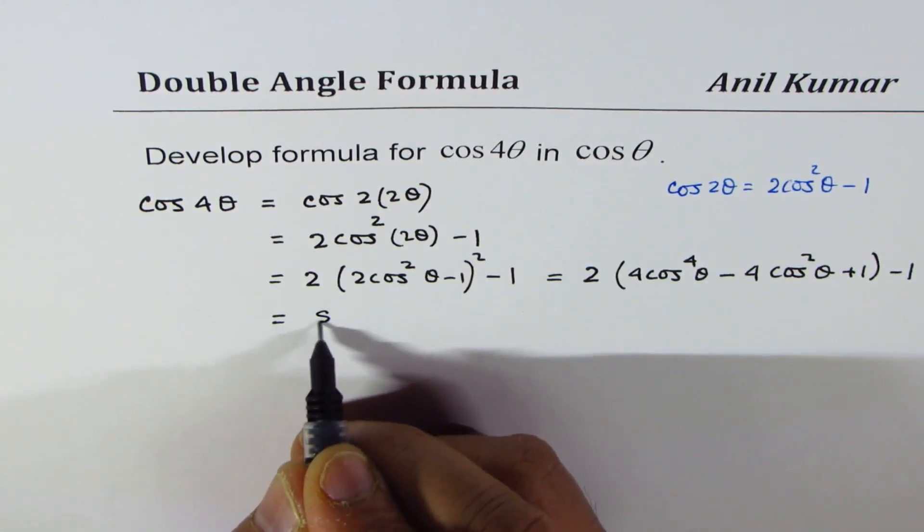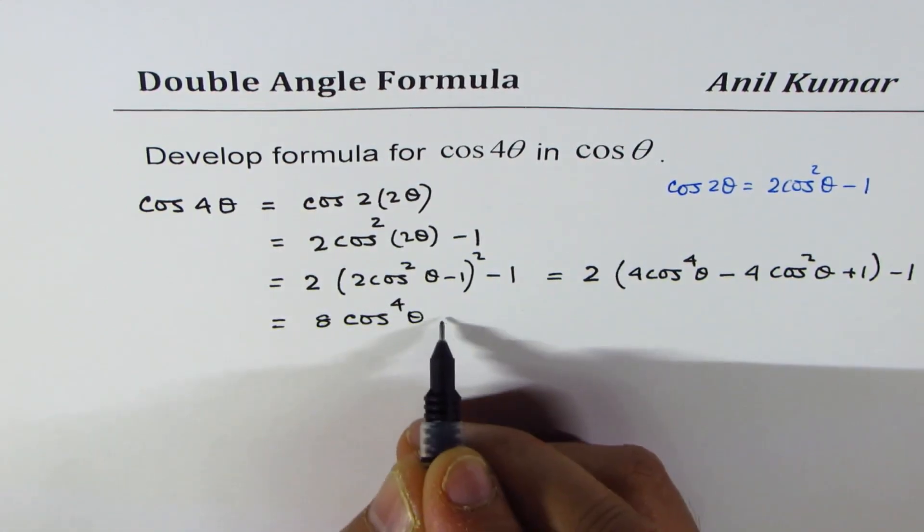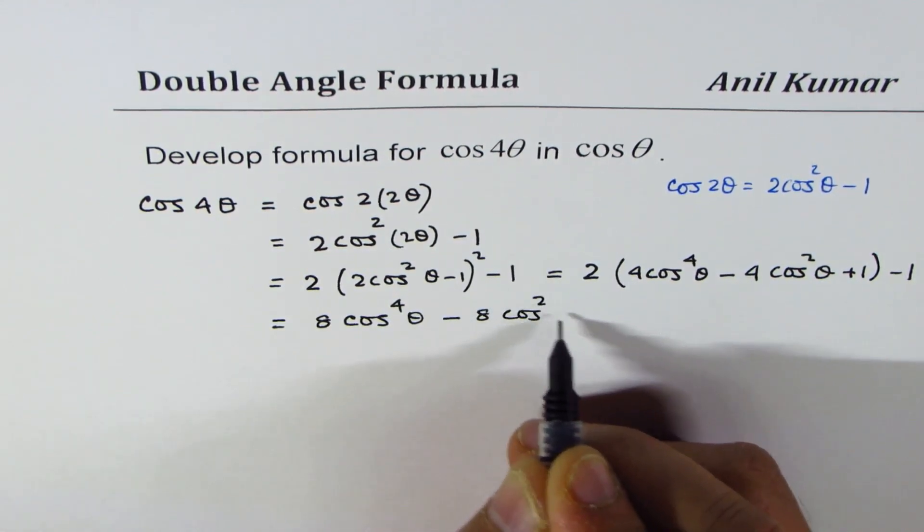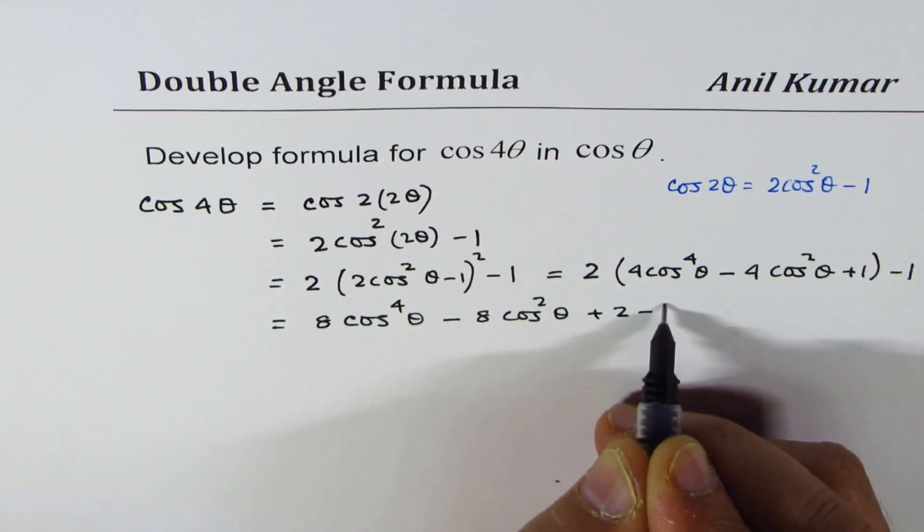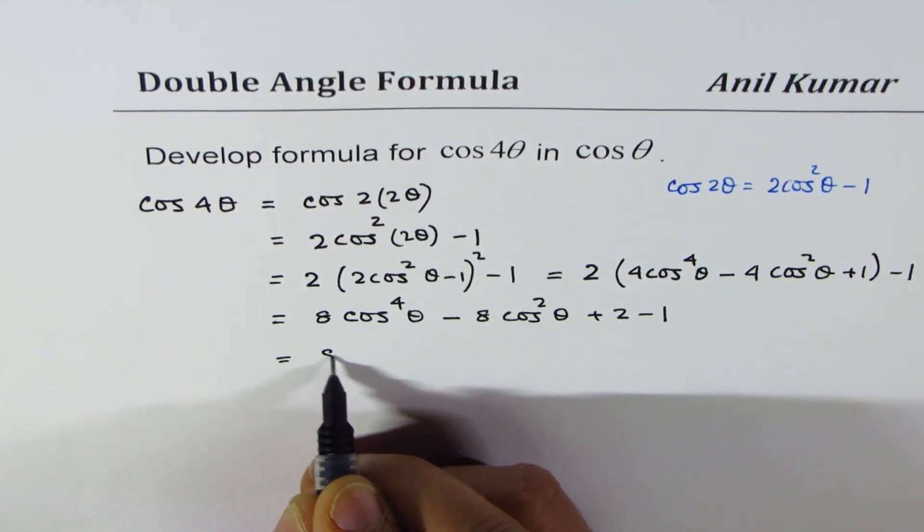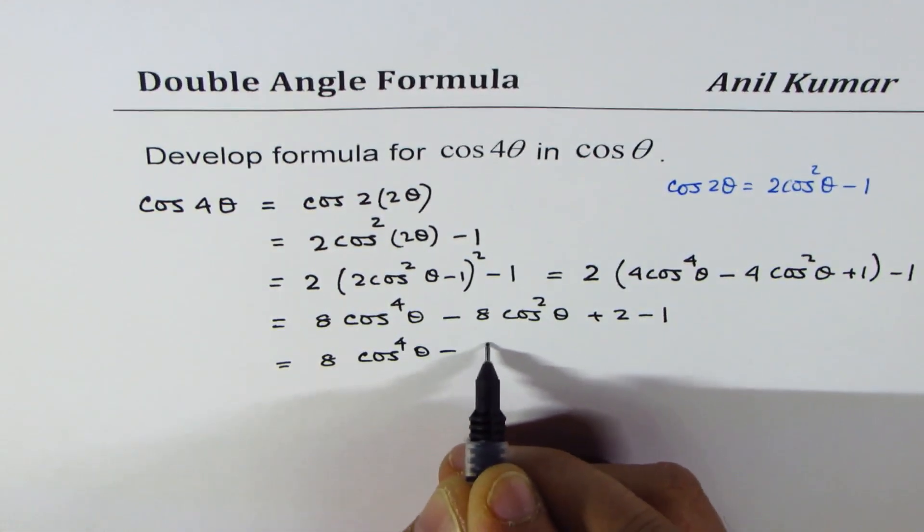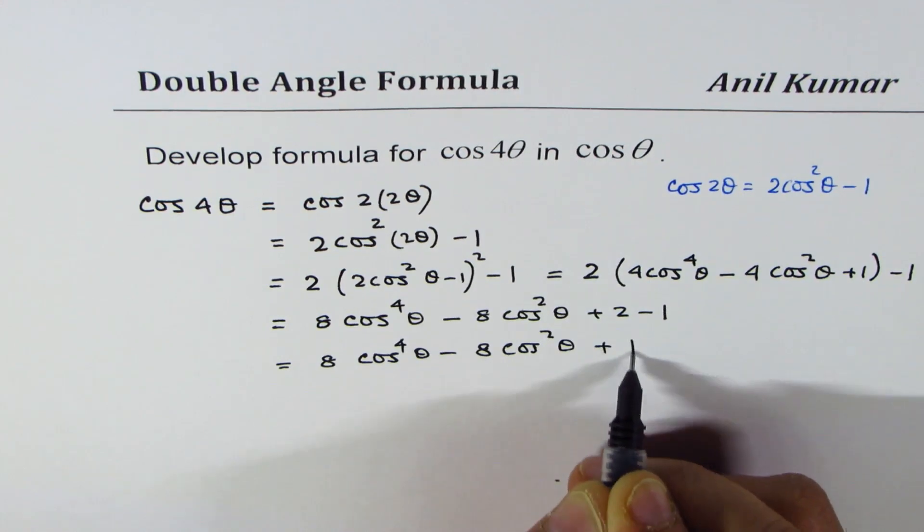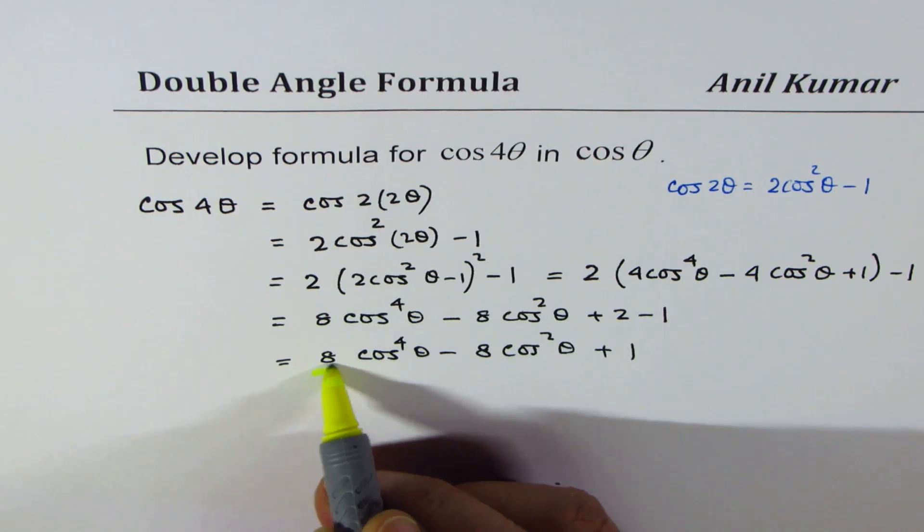So let us open this and we can write 2 times 4 is 8 cos⁴θ minus 2 times 4 is 8 cos²θ plus 2 minus 1. Or we could write this as 8 cos⁴θ minus 8 cos²θ plus 1. So that becomes a formula for you in cos 4θ.